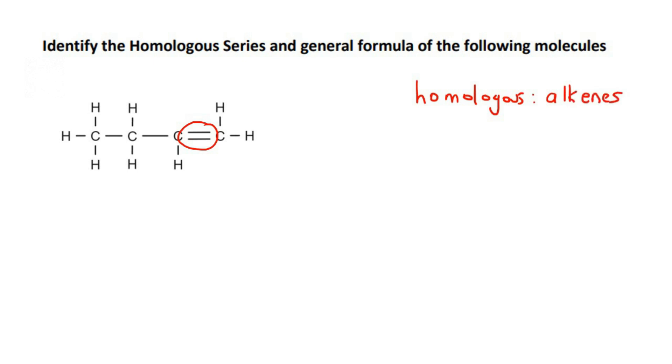And then for the general formula, once again, you can memorize this or you can just try to work it out. So for example, if we look at this molecule, there are four carbons. If you had to go count the hydrogens, there would be 1, 2, 3, 4, 5, 6, 7, 8.